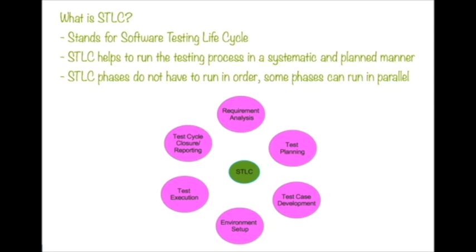The second phase is test planning. Usually the QA manager or QA lead will prepare the test plan and test strategy documents. The next phase is test case development, where the QA team writes test cases. If automation is involved, automation test cases will be created as well. Usually peers verify each other's test cases, or the QA lead will verify them.